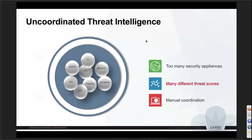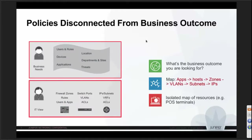The most important operational problem is that security policies may be disconnected from the business. A request comes in saying finance users can access only a particular set of servers, or all internet video watching is restricted after five o'clock. That business decision comes to a CIO or IT manager, who passes it to the IT guy, who must map it to apps, host IPs, zones, VLANs, and subnets — basically translating into five-tuple commands put into the firewall.